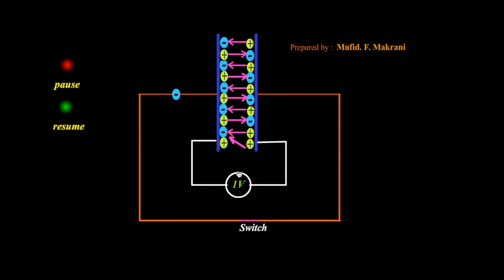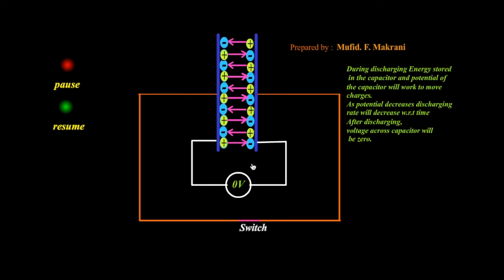The last electrons are coming with very less energy, and finally the potential becomes 0. This is how discharging takes place in a capacitor. Now let us see its voltage profile.